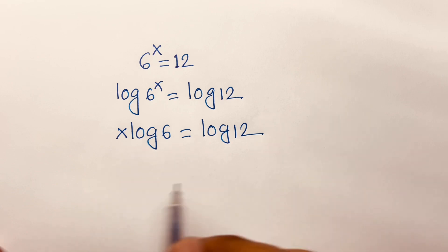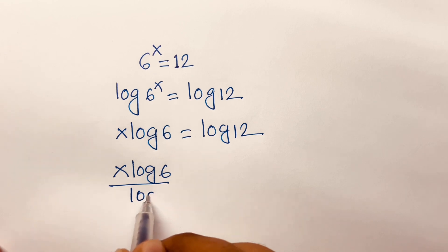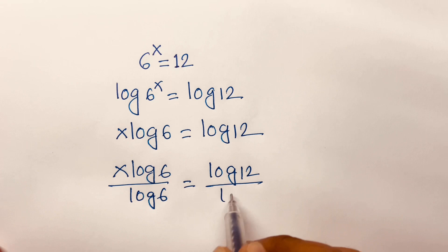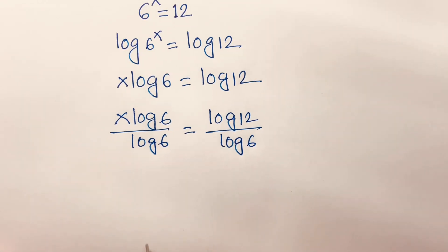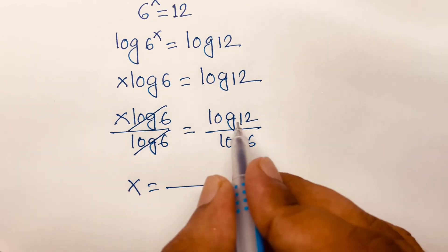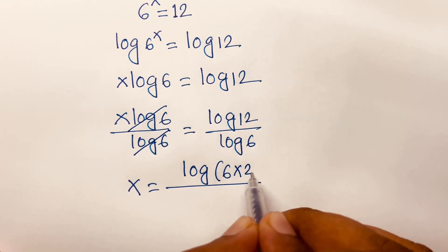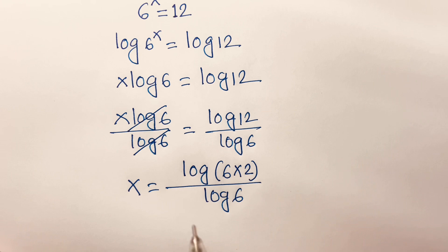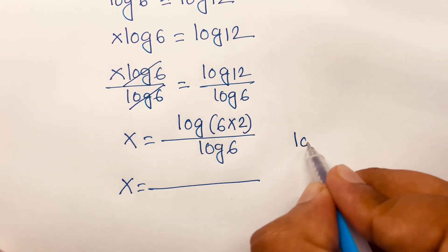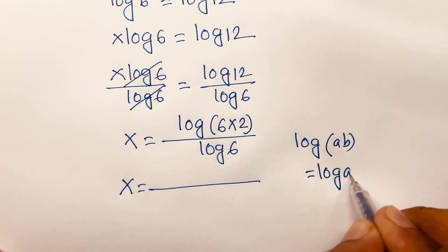Then I divide both sides by log 6, so x·log 6 over log 6 is equal to log 12 over log 6. The log 6 cancels, so x is equal to log 12 over log 6. Now, log 12 can be written as log(6×2).